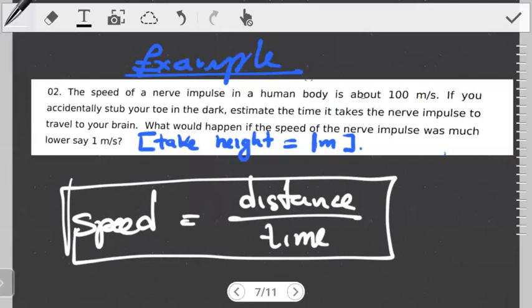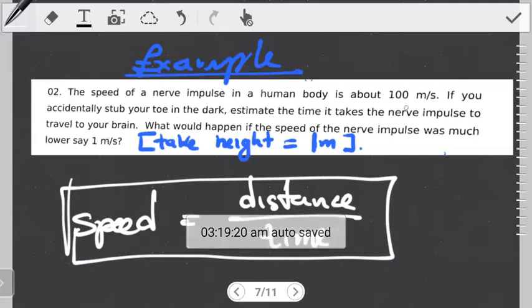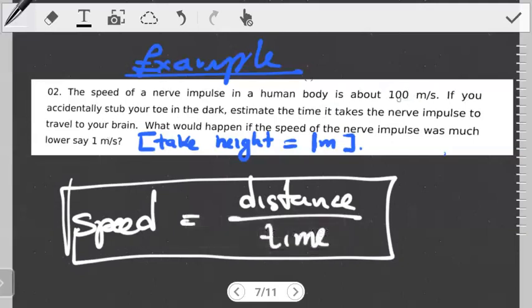The speed of the nerve impulse has been approximated to be on average 100 meters per second. What they want us to do is approximate how long it would take an impulse to travel to the brain. And then here we're taking the height to be one meter. So depending on what your question might be, the height might be something else.